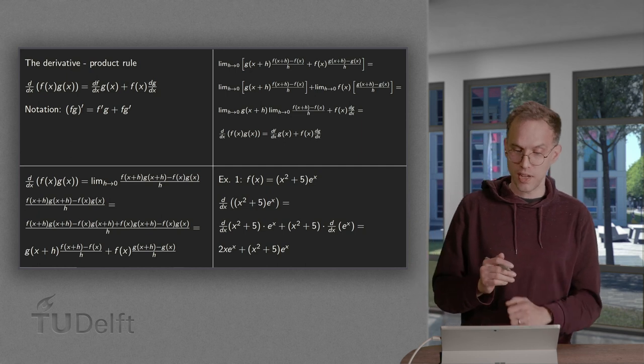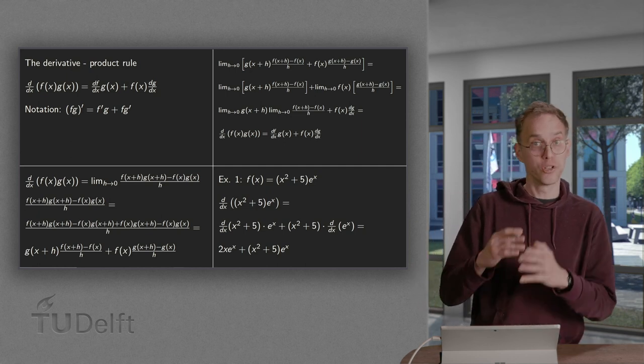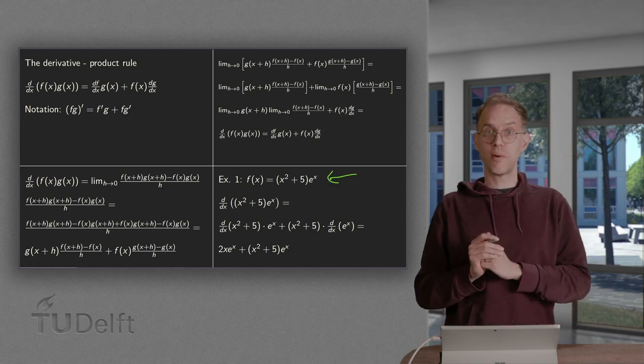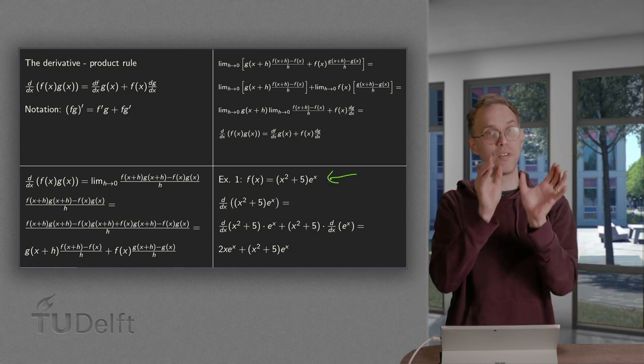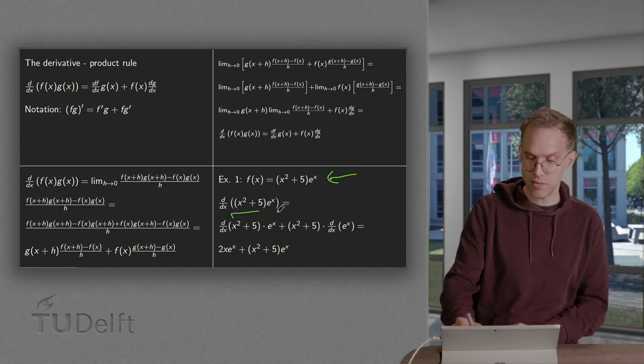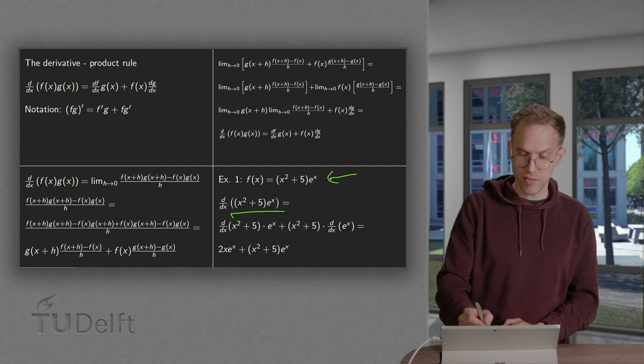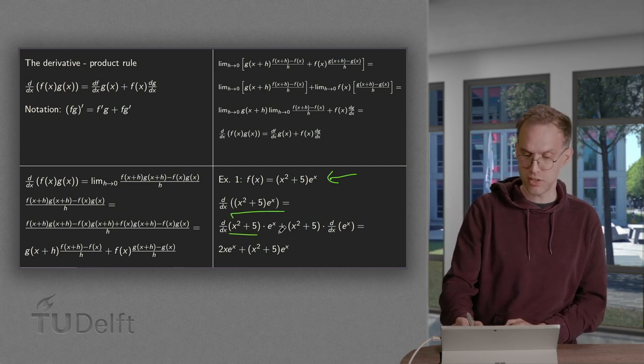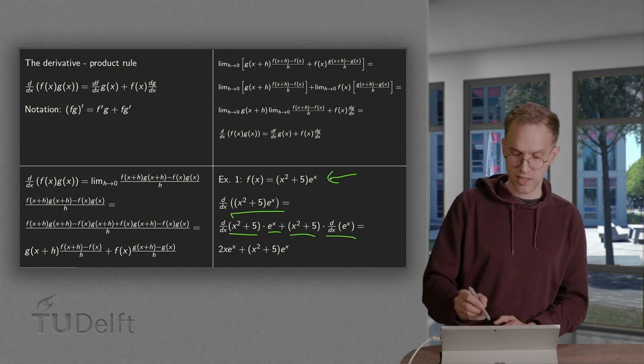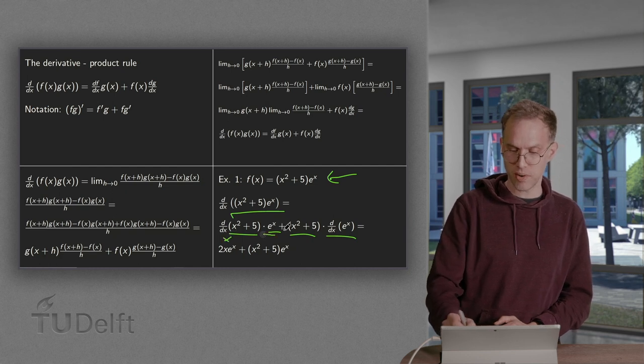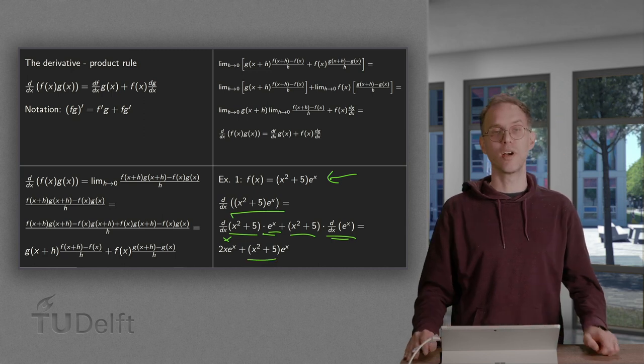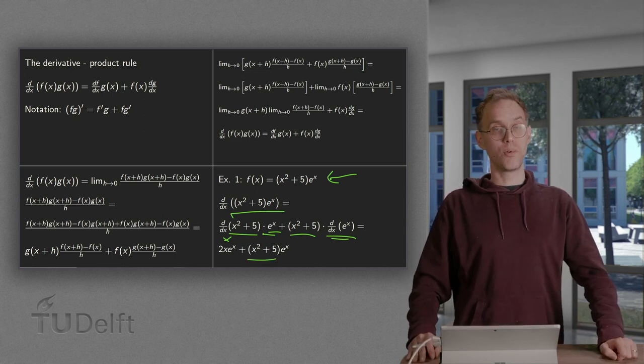So how does this work in this explicit example? If you have x squared plus 5 times e to the power x, what's the derivative of that? We differentiate the first part and leave the second term plus leave the first part and differentiate the second term. So we get 2x times e to the power x plus e to the power x times x squared plus 5. That is how we use the product rule.